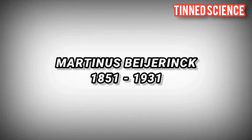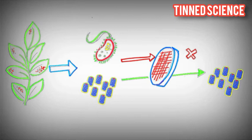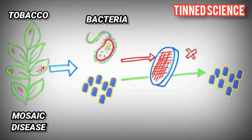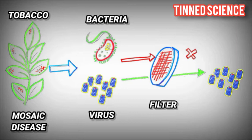Martinus Beijerinck is considered the father of virology. In 1898, he demonstrated the existence of viruses with an experiment on tobacco plants affected by mosaic disease. He observed that the liquid extracted from plants, even if filtered to remove any bacteria, was still infectious. The explanation for that was that the infective agent was far smaller than bacteria, so small to pass through the filter. And this was the very first proof of viruses' tiny size.